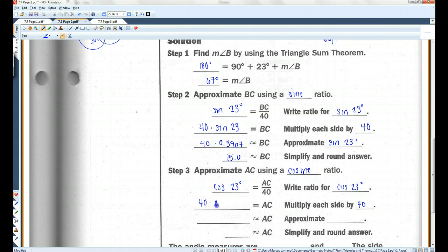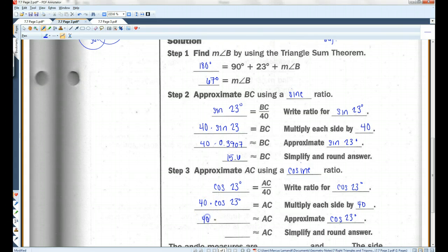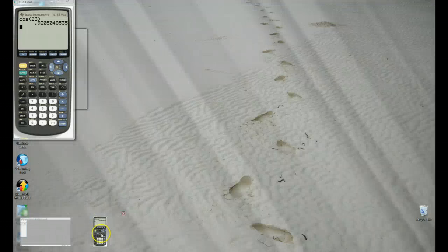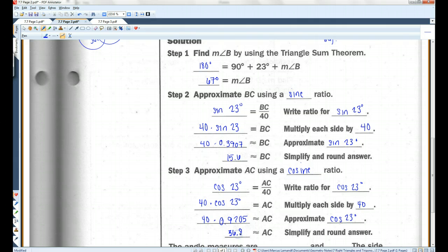I'm going to approximate cosine of 23 degrees. So, now I have 40 times 0.9205 times 40, 36.8.